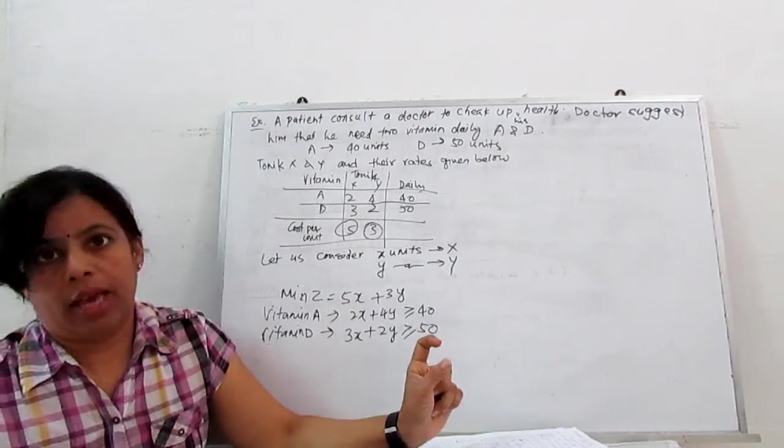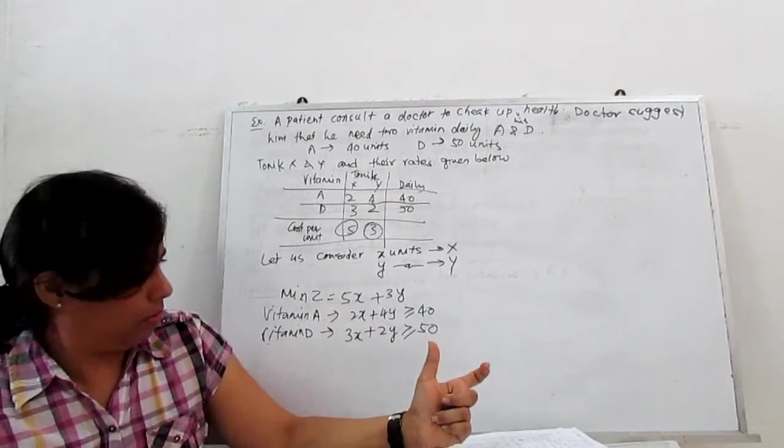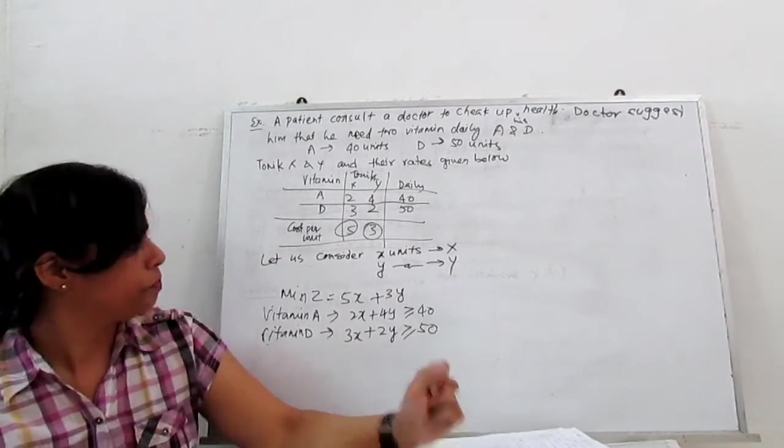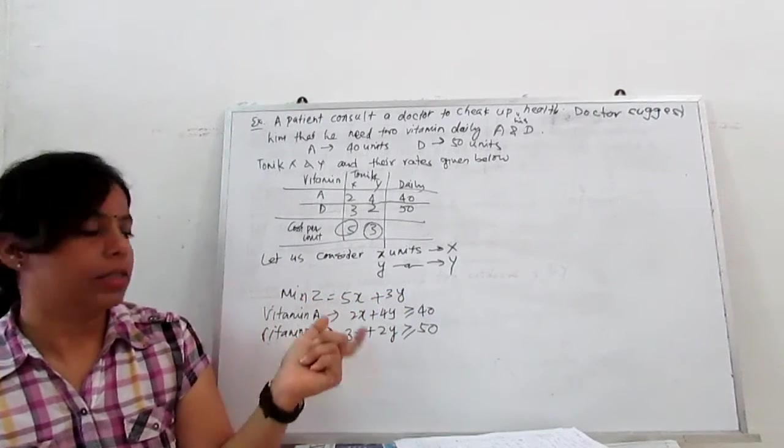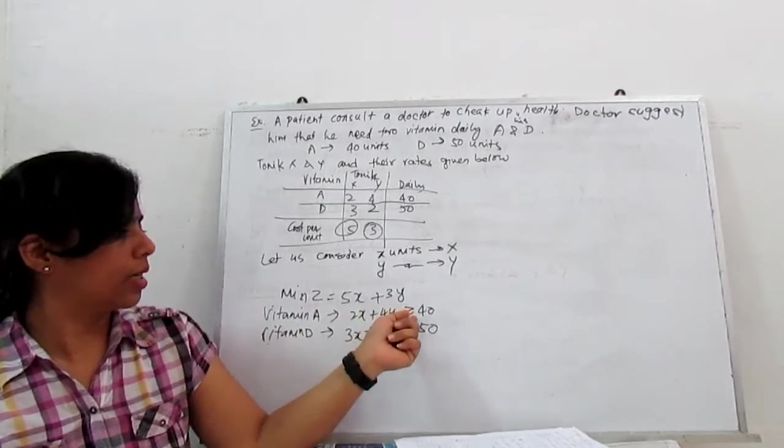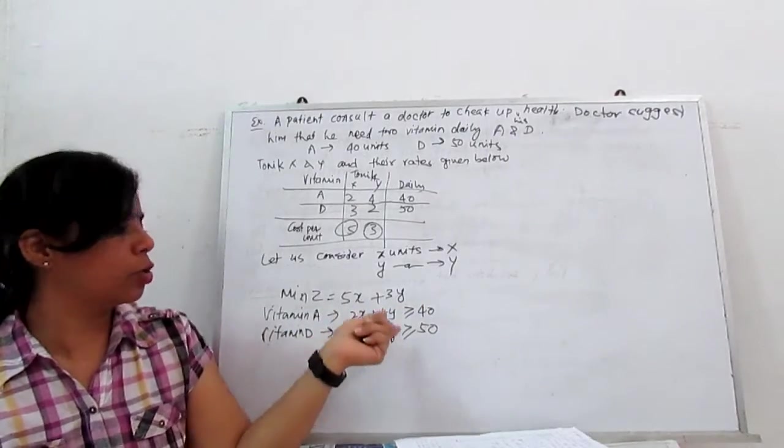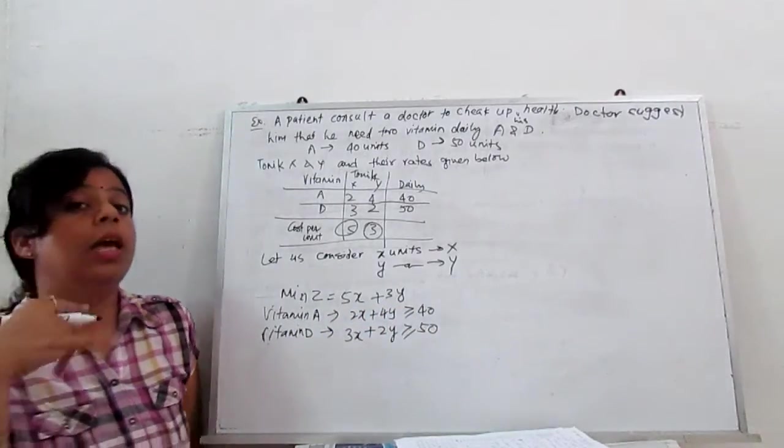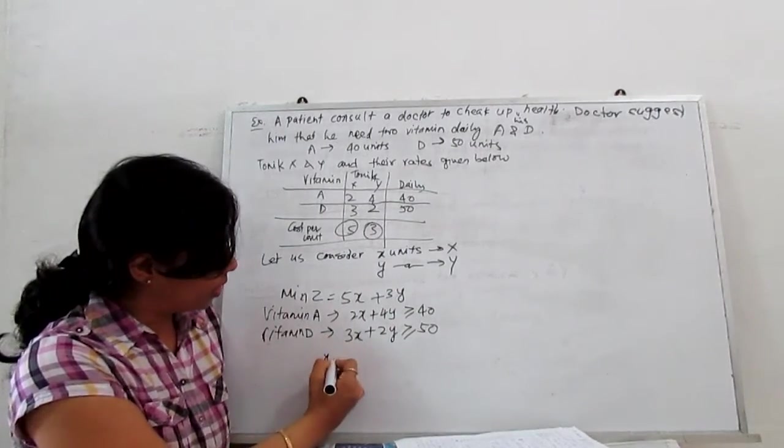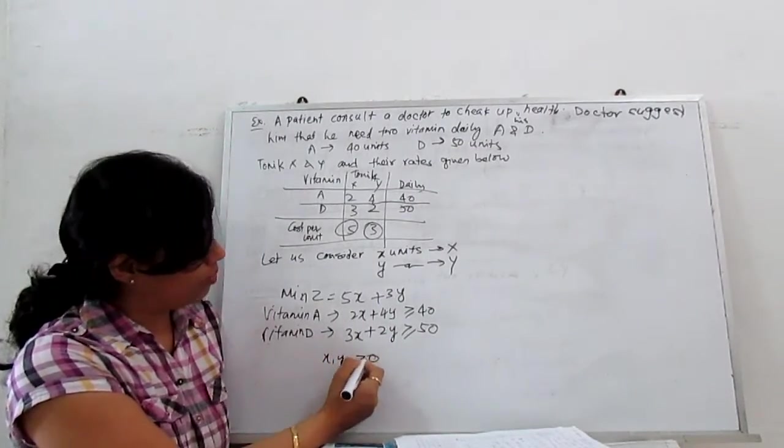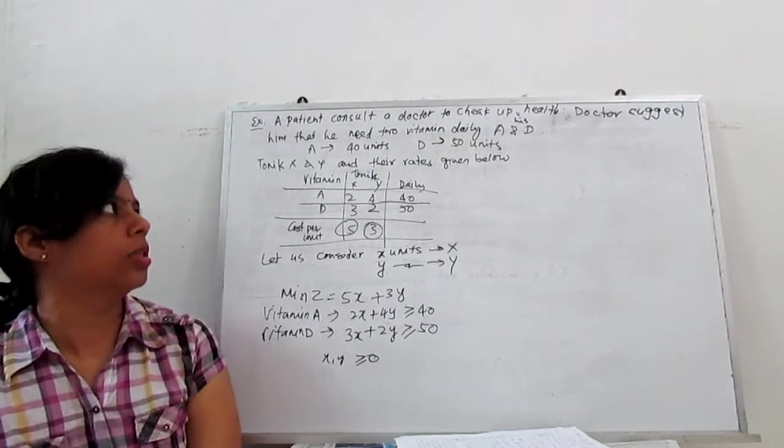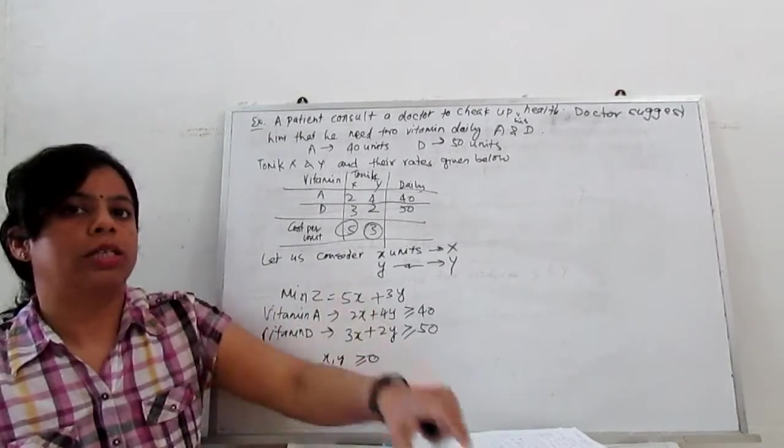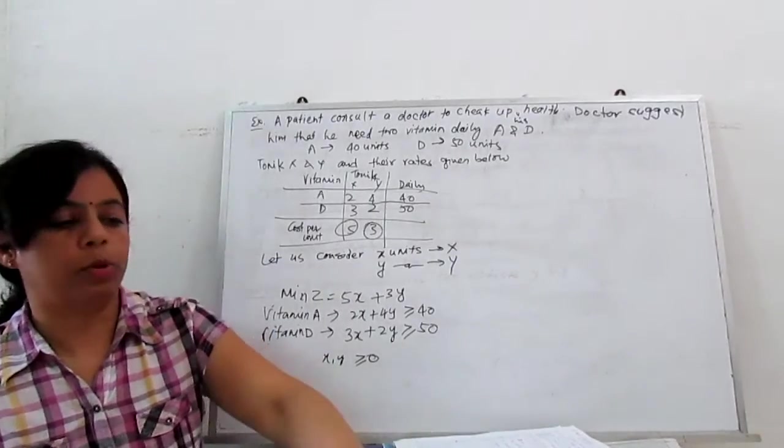So our LPP problem is: minimize Z = 5X + 3Y. Our constraints are 2X + 4Y ≥ 40 and 3X + 2Y ≥ 50. The last important condition is X and Y are always greater than or equal to 0 - they are non-negative. This is the formulation of the LPP or linear programming problem.